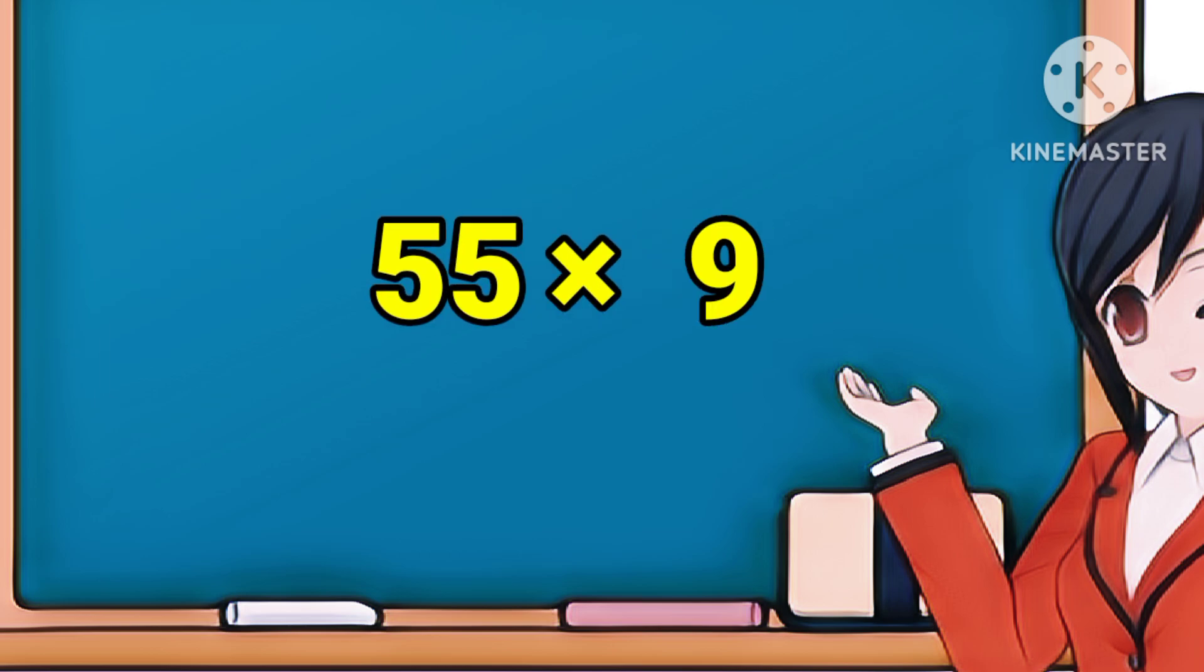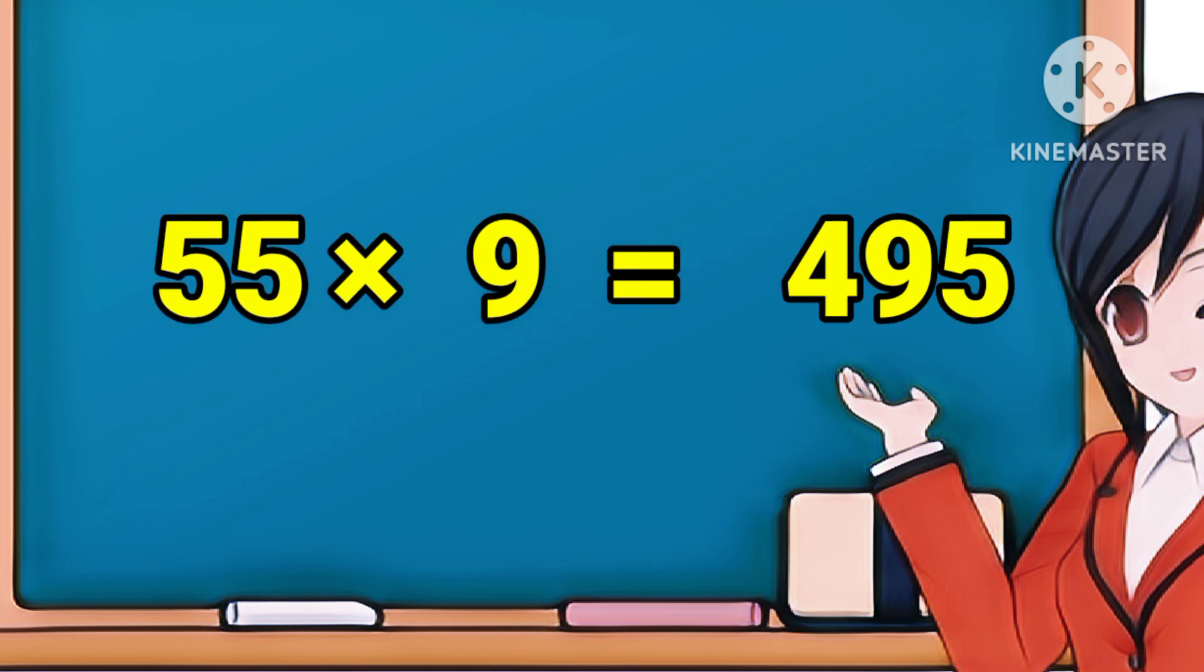55 × 7 = 385. 55 sevens are 385. 55 × 8 = 440. 55 eights are 440.